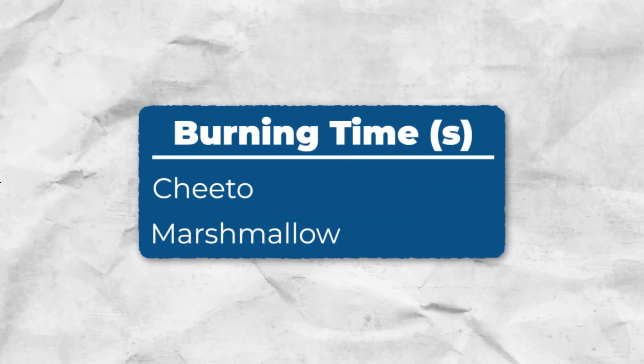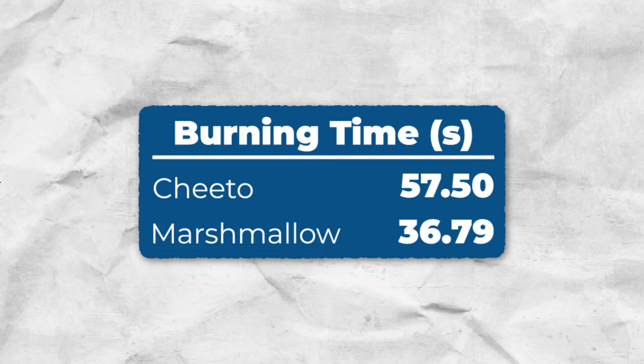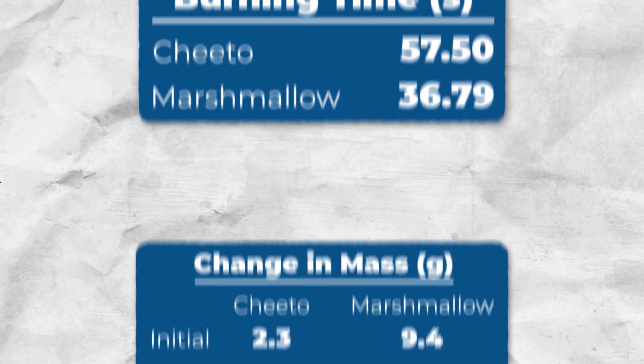The Cheeto burned for 57.5 seconds, and the marshmallow burned for 36.79 seconds. Now let's look at the change in mass — we'll measure the final mass of each burnt food item and subtract that from what it weighed before we set it on fire.